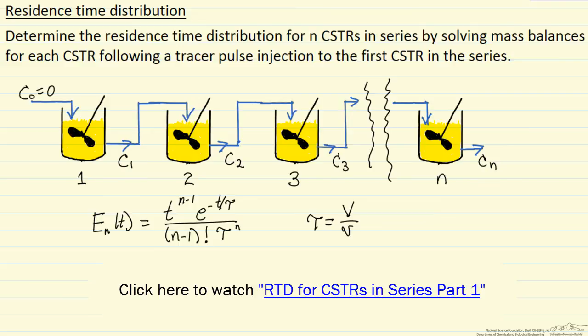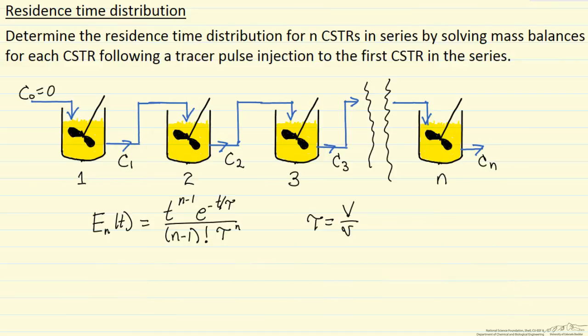This residence time distribution, which we're calling E, is a function of t for n CSTRs in series. It's a function of time and then tau,